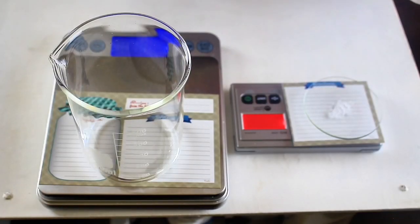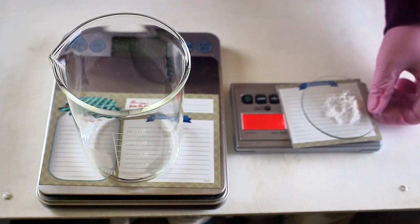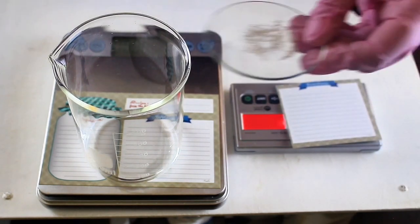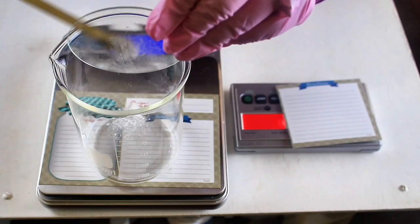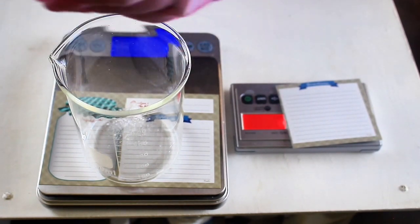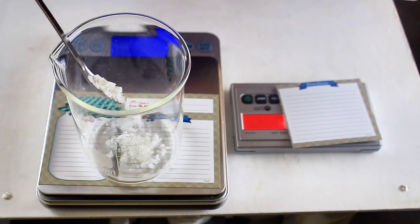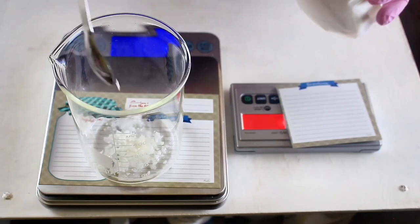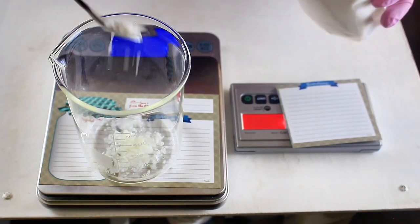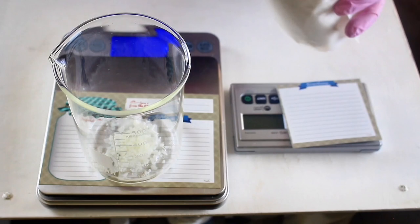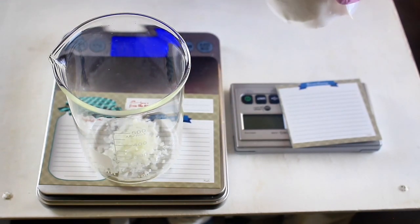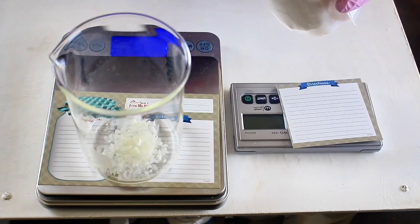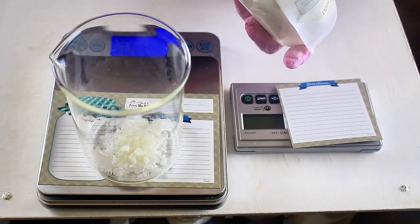And I add 0.4 grams of Sepimax Zen. I just love the skin feel of this ingredient. It feels just really, really silky on your skin. Then, lastly, to the oil phase, we are going to add 8 grams of Lotion Pro 165. This is our emulsifier. And remember, this is one of my favorite emulsifiers, so it's going to make this body milk very light.